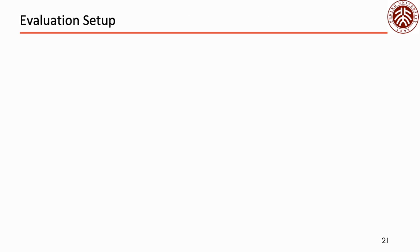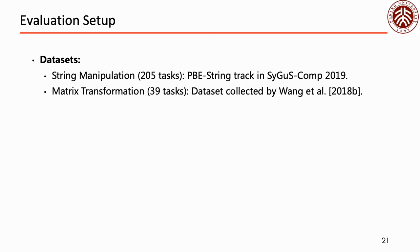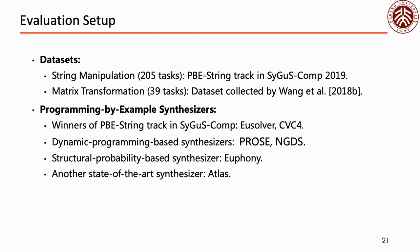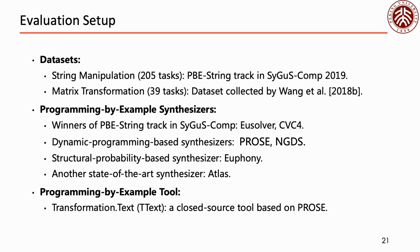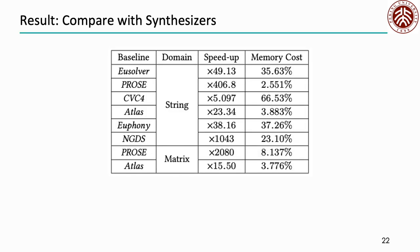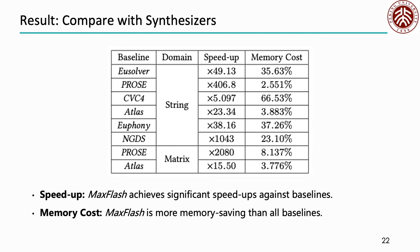In our evaluation, we construct two datasets representing two popular domains of programming by example: the string manipulation domain with 205 tasks, and the matrix transformation domain with 39 tasks. We compare MaxFlash with six state-of-the-art synthesizers, including the winners of the PBE string track in SyGuS, synthesizers based on dynamic programming and structural probability, and another state-of-the-art synthesizer. We also consider the best PBE tool on the string domain, transformation.text, a closed-source tool based on PROSE. This table lists the results, demonstrating that MaxFlash achieves significant speed-ups against all baselines while being more memory-saving.